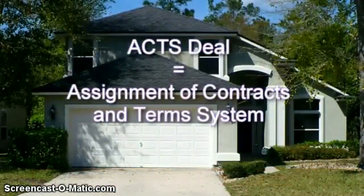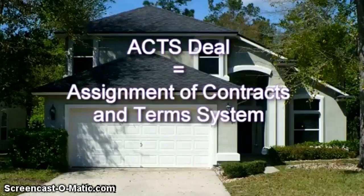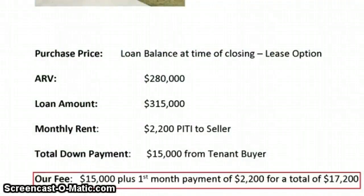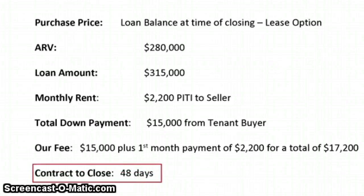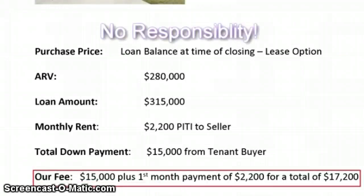This deal is called an ACTS deal — Assignment of Contracts and Terms System — invented about two and a half years ago, and it's really changed our industry. For the first time, we found a way to get paid on over-leveraged houses, and what a great service for both the seller and the buyer. We kept the entire $15,000 plus the first month's rent. From 30 days after the attorney closed the lease purchase agreement, our seller is collecting $2,200 a month directly from our buyer and we're out of it — we got a release signed by the seller. It took 48 days because we turned down several buyers we didn't like. We made $17,200 total and have no more responsibility to the house whatsoever.